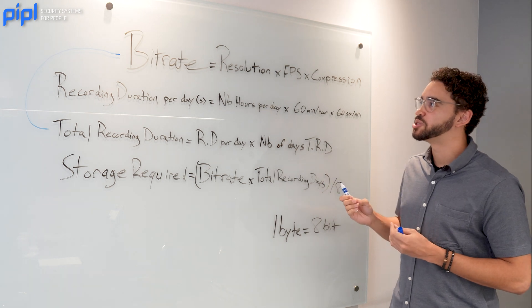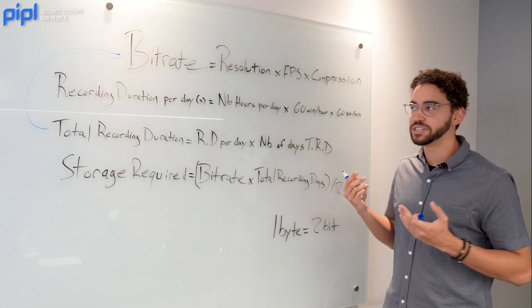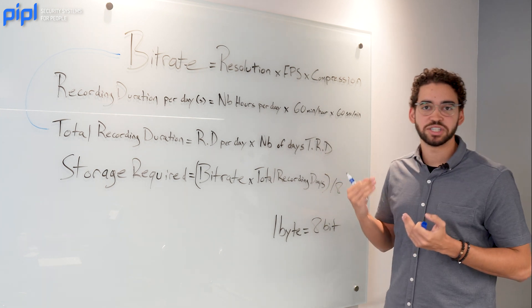That was the formula to understand how the calculator works. It's a good way to show an end user that you know how it works and to better understand the storage space you need every time you're building a project. Remember to always get a little bit more storage than what the tool shows — simply because we're in the security sphere, it's always better to prevent anything that can happen. If you go exactly for the amount shown on screen, it may be less than what you actually need.